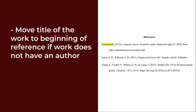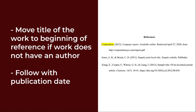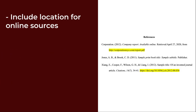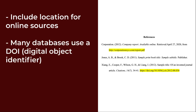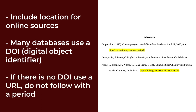When the work does not have an author, move the title of the work to the beginning of the reference and follow with the date of publication. For online sources, you should include a location to show readers where you found the source. Many scholarly databases use a DOI, digital object identifier. Use a DOI in your citation if you can; otherwise, use a URL. The DOI or URL is usually the last element in a citation and should not be followed by a period.